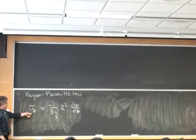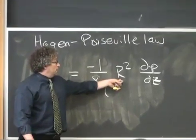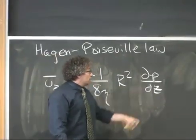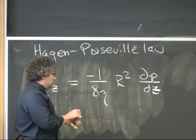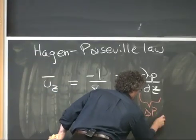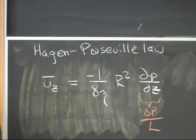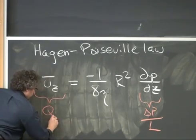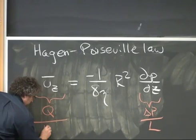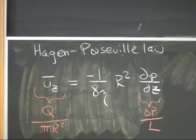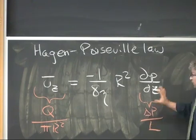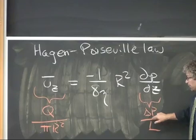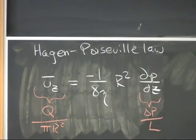Here is the average velocity as a function of viscosity, the multiplicative factor R-squared, and the pressure gradient. If I assume the pressure gradient is uniform, I can write it as delta-p over L. If I want to write this in terms of the total volumetric flux, I can say there's a total volumetric flux Q divided by the cross-sectional area. I can then write this equation in terms of three things: a pressure drop, a volumetric flux, and a collection of other terms. That collection of other terms is what we call the hydraulic resistance.